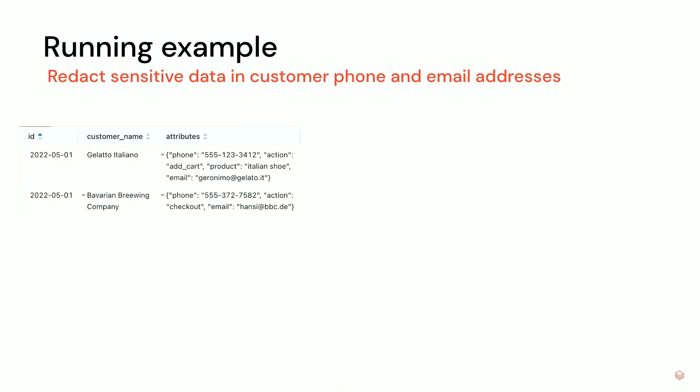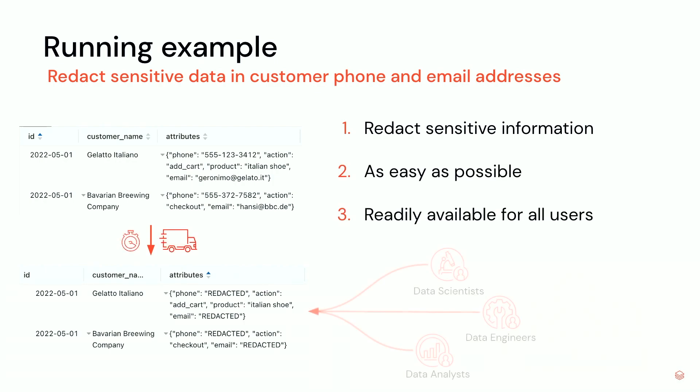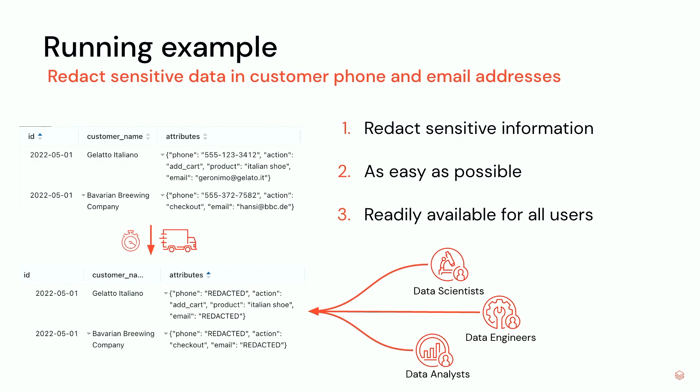Let's say you have super awesome data that you want to make available for all your users. In this example, you have a bunch of columns: an ID, a customer name, but also you gather some streaming data — let's say customer actions — that has JSON in it. It has the phone number, the action that's happening, the email, and it can have other information as well. What you want to do is make sure that the sensitive information is not hitting users that you don't want to see it. So you want to redact the sensitive information in this attributes column, as easily as possible, and make it readily available for all your users — your data scientists, engineers, and analysts.